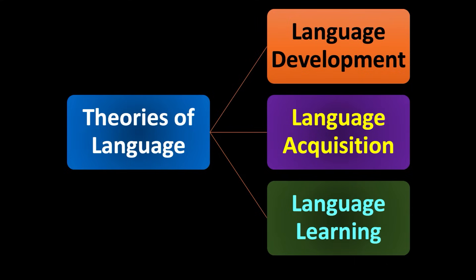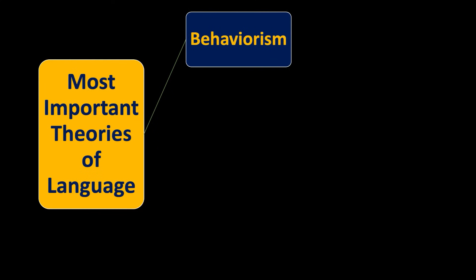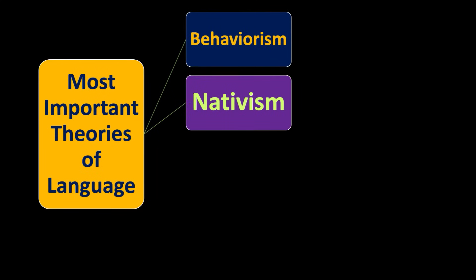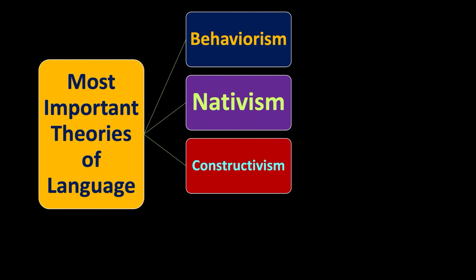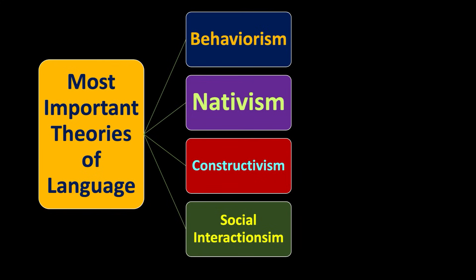You can check out the link below the video about the differences between acquisition and learning. The most important theories of language are: first, behaviorism; second, nativism; third, constructivism; and fourth, social interactionism. These are the most important theories of language acquisition, development, or language learning.